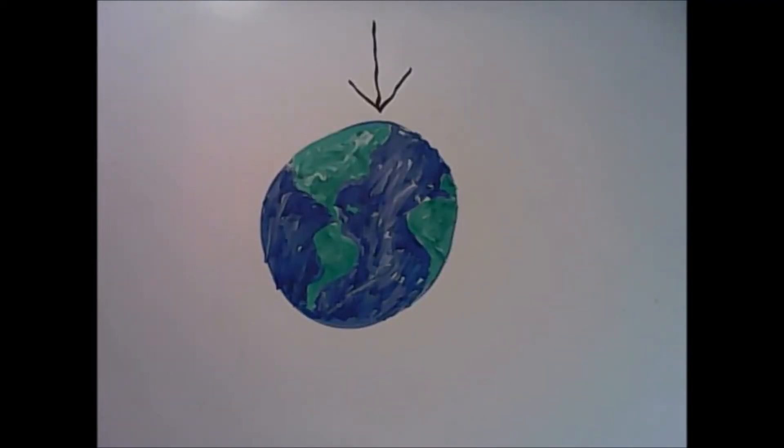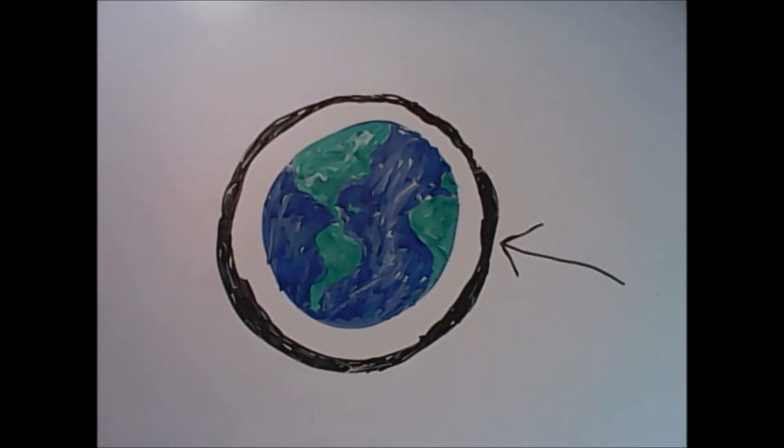This is the earth. And this is the layer of greenhouse gases. The sun's rays warm the earth. Part of the sun's rays are reflected back and become trapped by the greenhouse gases,